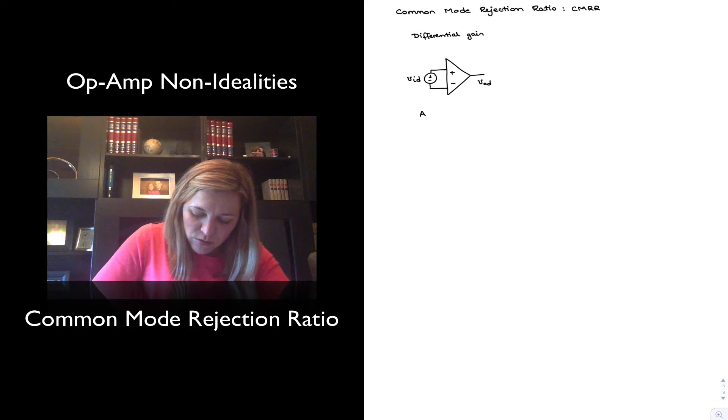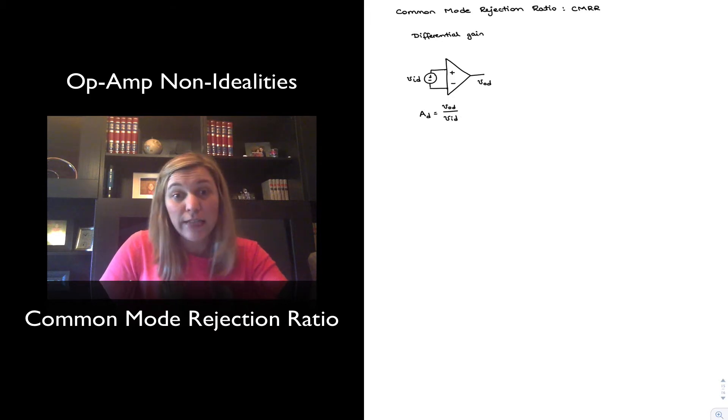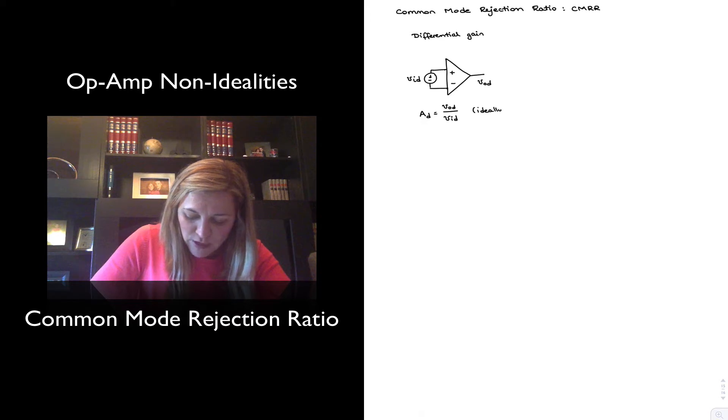And the ratio of that output voltage to the differential input voltage, that's what we understand to be the differential gain, and it's what we have been referring to up to now as the signal gain. Ideally, the open-loop differential gain of an op-amp should be infinity.